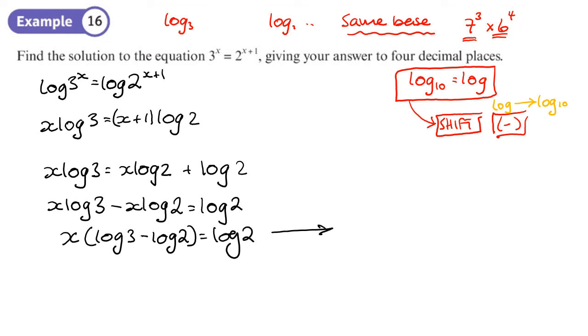So now I can get x. x is going to be log 2 divided by log 3 minus log 2. You could actually write this as the log of 3 divided by 2, couldn't you? Yeah, because it's the same base. So let's work out what x is and give our answer to 4 decimal places.